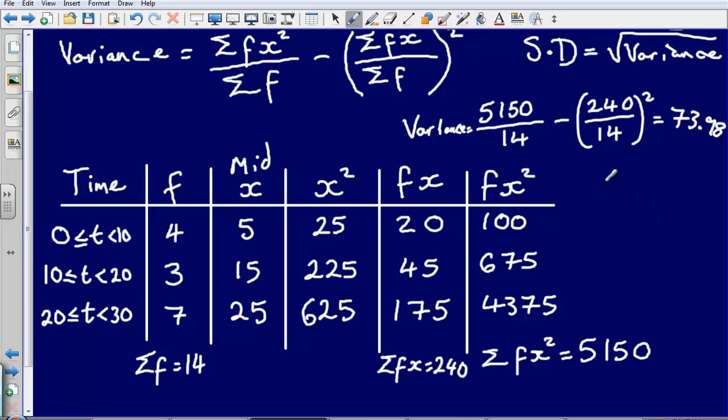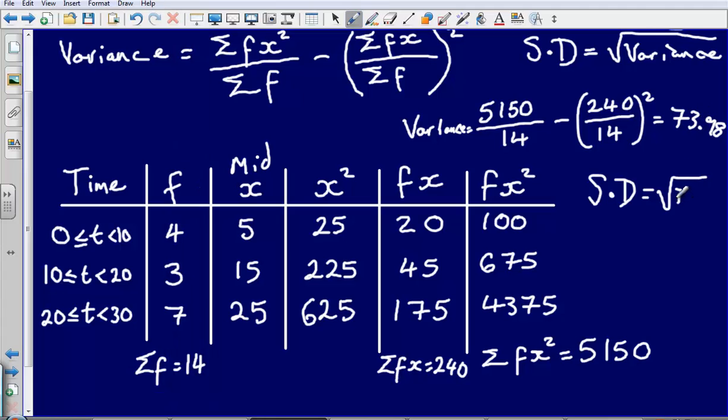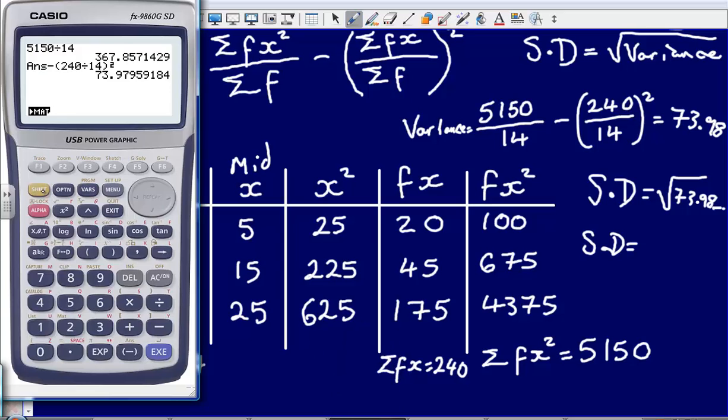Now to calculate my standard deviation, I'm simply going to take the square root of this value. So the square root, and we wouldn't take the square root of 73.98. We would take the square root of the exact amount that is in our calculator. So the square root of, and I'm just going to put 73.98, and I'm going to add a few dots to represent the fact that I've included all of that information in my calculation. And so my standard deviation here is going to give me an answer of 8.601. We'll just call that 8.6.